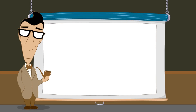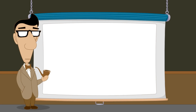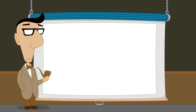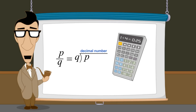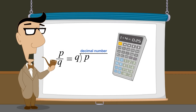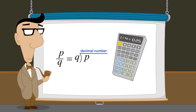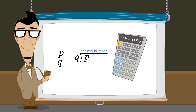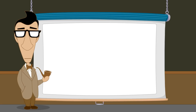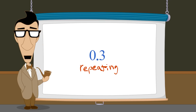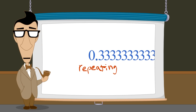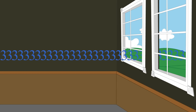Any fraction can be converted to a decimal number by simply dividing the numerator by the denominator. We can do this using long division or with a calculator. The result of this division will be a decimal number which is equivalent to the fraction. This decimal number will either terminate or repeat. A terminating decimal number has a finite number of digits after the decimal point. A repeating decimal number has a sequence of digits after the decimal point which repeats forever.